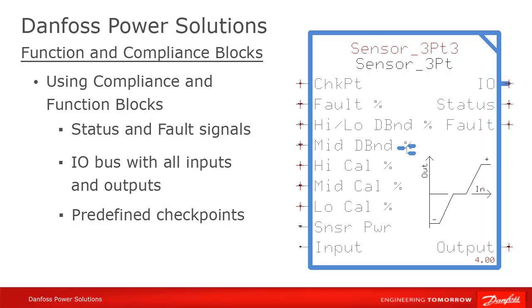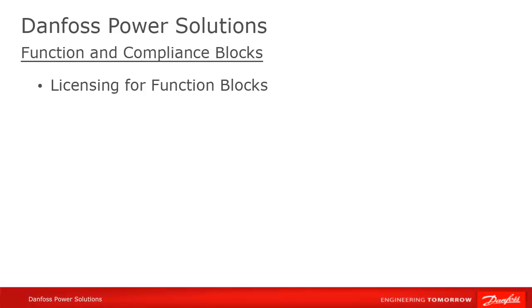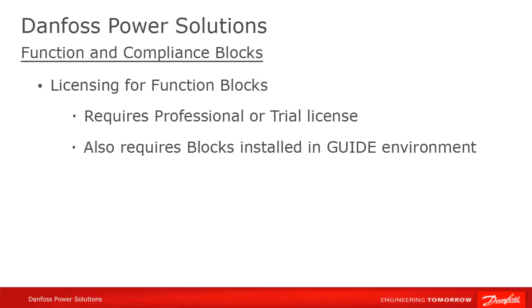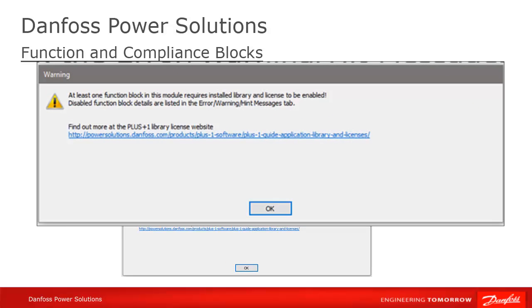When you see the blue ribbon in the upper right-hand corner of a page in a function block, that tells you that the page can be entered into to find more information or has adjustable signals. If there's no blue ribbon, the page is locked. You need a pro or trial license and the function blocks installed in your Guide environment to modify a project containing that particular function block. If you have the correct license but do not have the function blocks in your Guide environment, you'll see a warning message. You can either check the warning to see which function block library is missing, or just install them all using the Update Center.